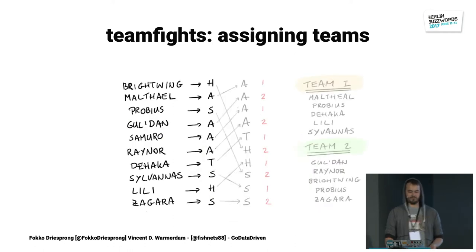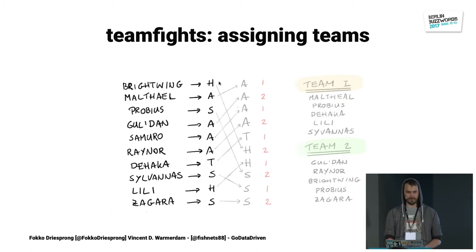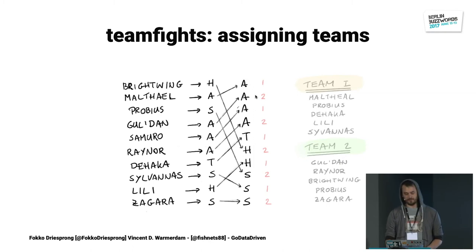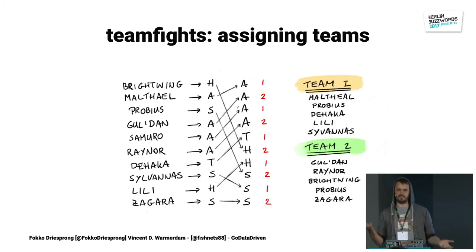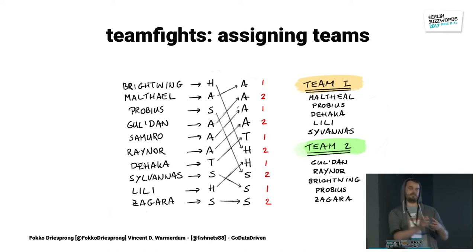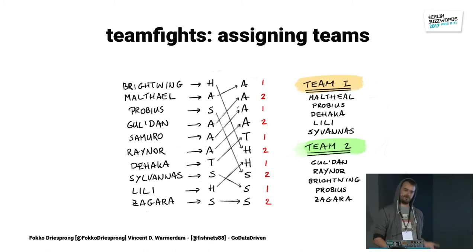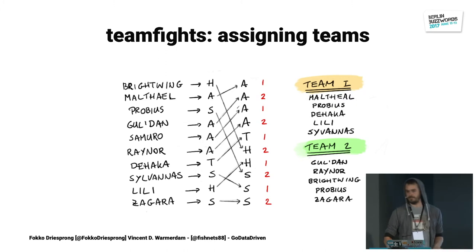Whenever we get a queue of ten people, we first do a mapping: this is the character and this is the type. We sort on character type, and if it's sorted, we just use a heuristic: the odd-indexed and even-indexed ones go to different teams. This gives us a guarantee that at least every team has the same consistency of character types. You will never get all assassins versus all healers this way. It's just a heuristic — not the best one — but good enough for our streaming situation.